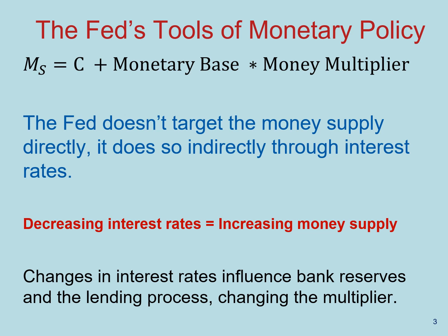So by changing interest rates, they're able to change the money supply at the same time. A key thing to remember is that in order for the Fed to decrease interest rates, it has to increase the money supply. Changes in interest rates influence bank reserves and the lending process, changing the multiplier as well. Let's work through an example of one kind of tool that the Fed has in their tool belt to change the money supply through interest rates.